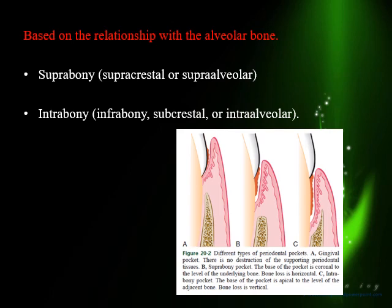In deep pockets, as the root becomes convergent, the interdental septum becomes wider, and the buccal and lingual bone also becomes wider — so the deeper the pocket, the more likely you are to have an infrabony pocket. This type of bone loss is called angular bone loss. In a suprabony pocket, the base of the pocket is above the alveolar crest and there is horizontal bone loss. In an infrabony pocket, the base is below the alveolar crest, causing angular or vertical bone loss. Traumatic occlusion can also cause angular bone loss.